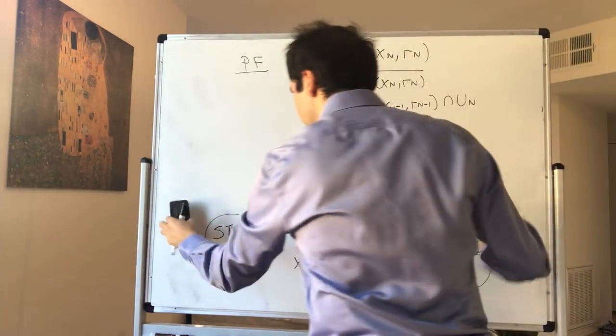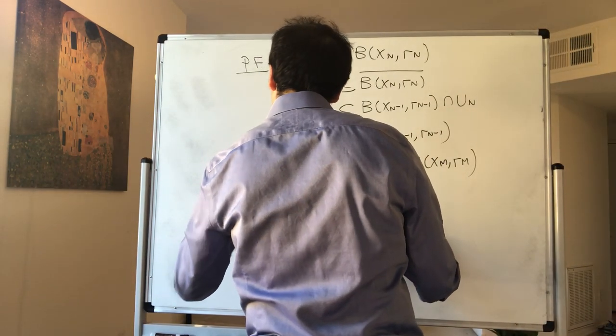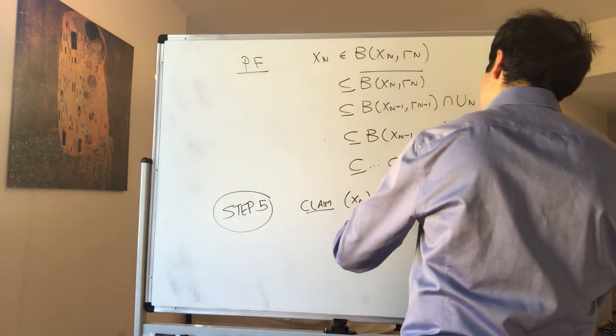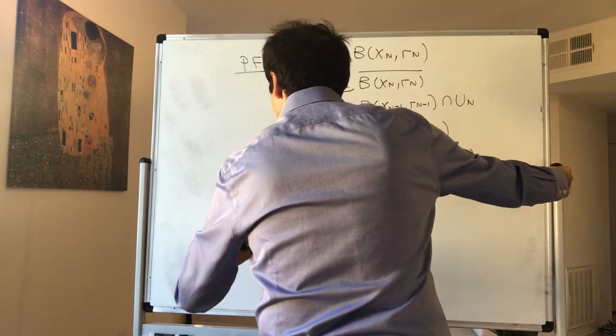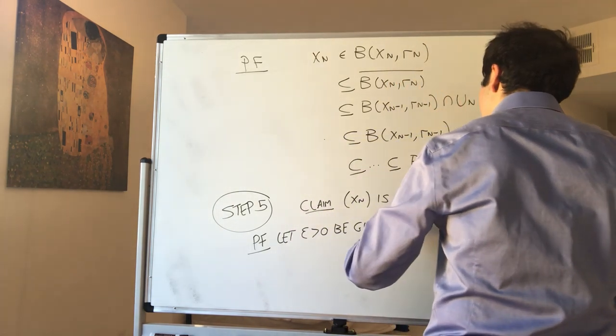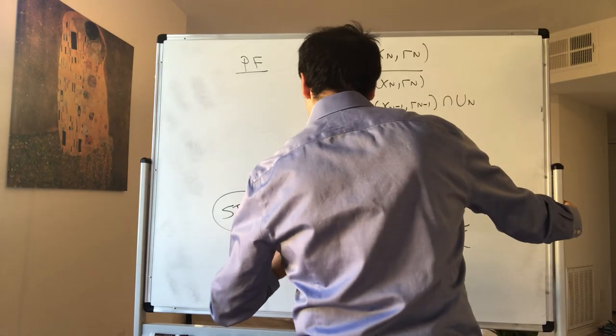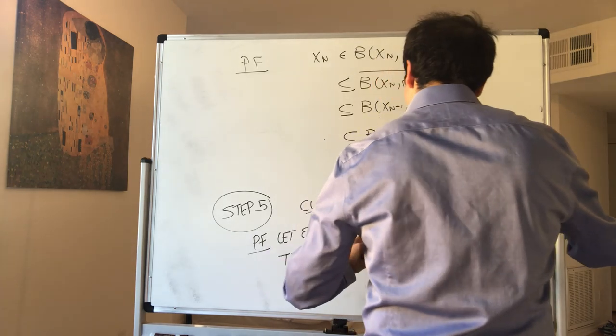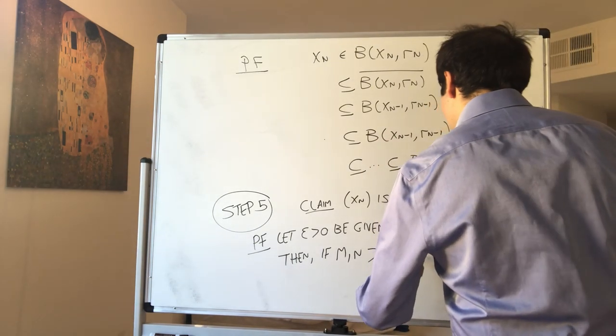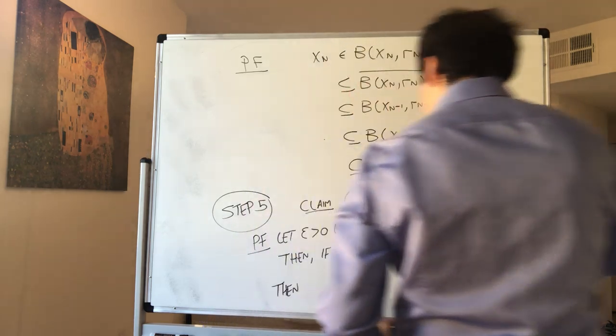All right, very good. And it turns out this way you can show that it's Cauchy. So I think this is step five. Claim: xn is Cauchy. Not too bad to show. Proof: let epsilon be given. Let capital N be 1 over epsilon, because the radii were like 1 over n. Then if m and n are greater than capital N, without loss of generality we can assume one is bigger than the other. So without loss of generality, n is bigger than capital N.